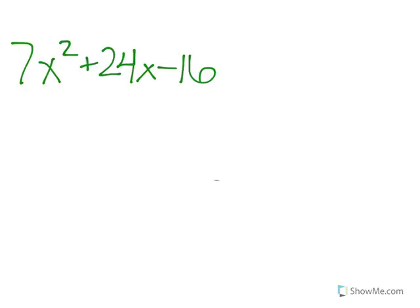Our first example is 7x² + 24x - 16, and we want to find the factors by grouping. So what we do is we will call 7 a, 24 b, and 16 c, just like we did with the quadratic formula, and we know that when you have a degree of 2,